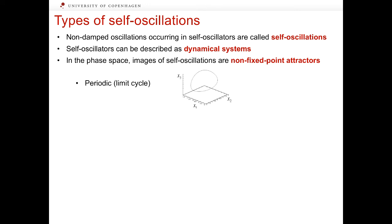If the self-oscillations are perfectly periodic, their image in the phase space is a limit cycle. If oscillations are not strictly periodic and not chaotic either, if they combine two or more time scales of oscillations, their image is an invariant torus.